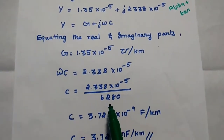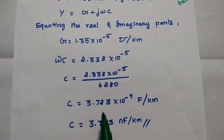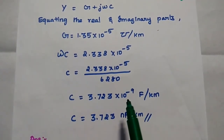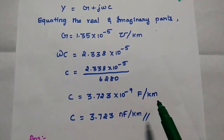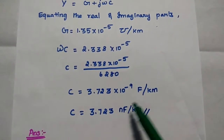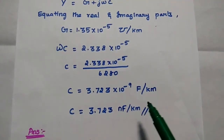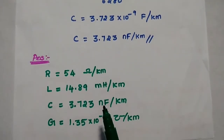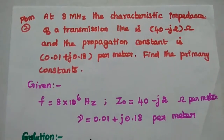Moving omega to the denominator and substituting its value, we get C equal to 3.723 into 10 to the power of minus 9 farad per kilometer. 10 to the power of minus 9 means nanofarad per kilometer. So the final answers for the first problem are given. The next problem follows.